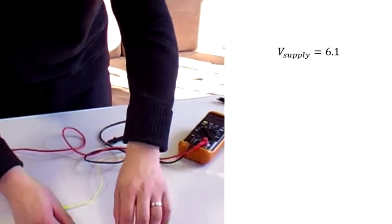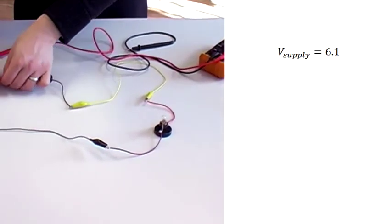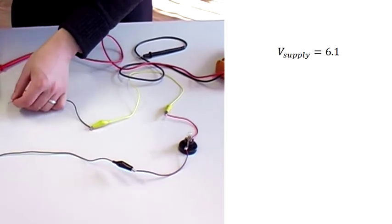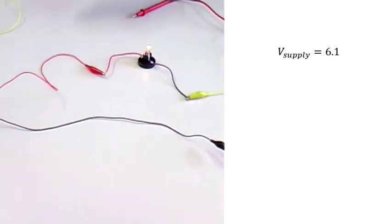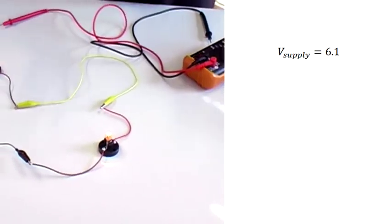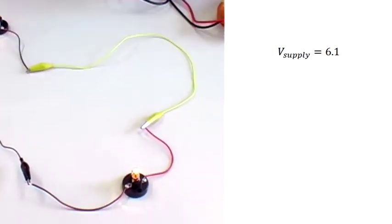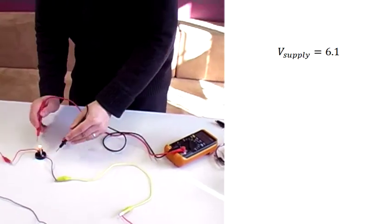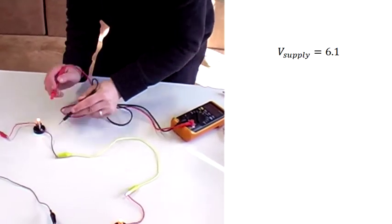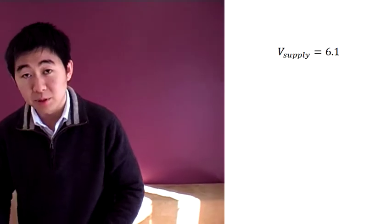6.1 volts is the supply voltage, which is the voltage before the current passes through any component. Now the voltage is passing through two light bulbs here in series. If we measure the voltage across any component, it will give us the voltage drop across that particular component.